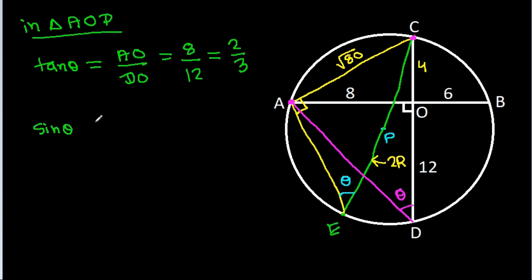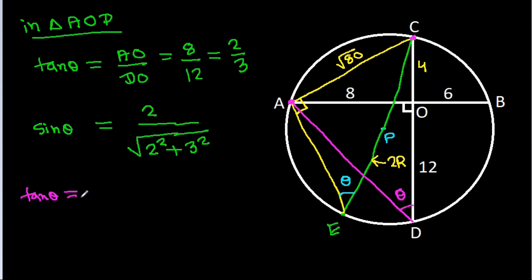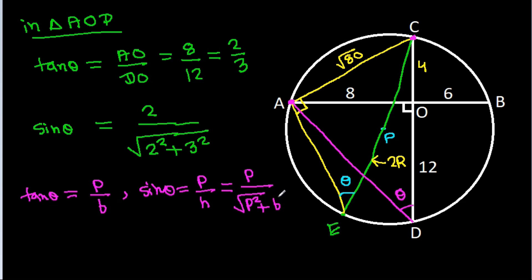So sin theta equals 2 divided by square root of (2 squared plus 3 squared), because tan theta equals perpendicular over base and sin theta equals perpendicular over hypotenuse, which equals P divided by square root of (P squared plus B squared). Substituting back, R equals square root of 80 divided by (2 times sin theta).